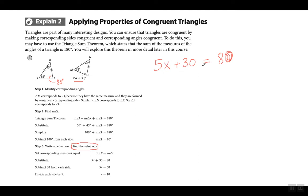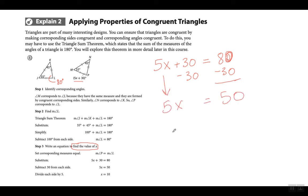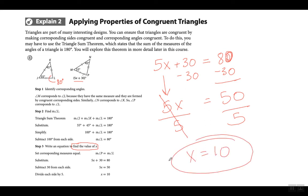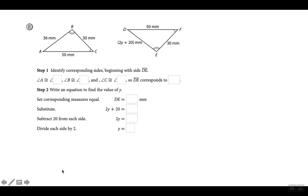This angle has to equal that angle for the two triangles to be congruent. Este ángulo tiene que medir igual que este ángulo para que los dos triángulos sean congruentes. So now I find x by subtracting 30 from both sides — 5x = 50 — then divide both sides by 5. The 5s cancel out, so x equals 10.